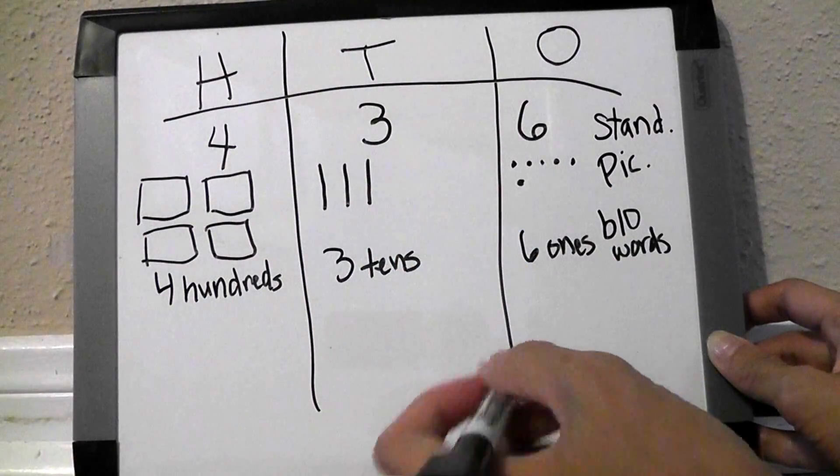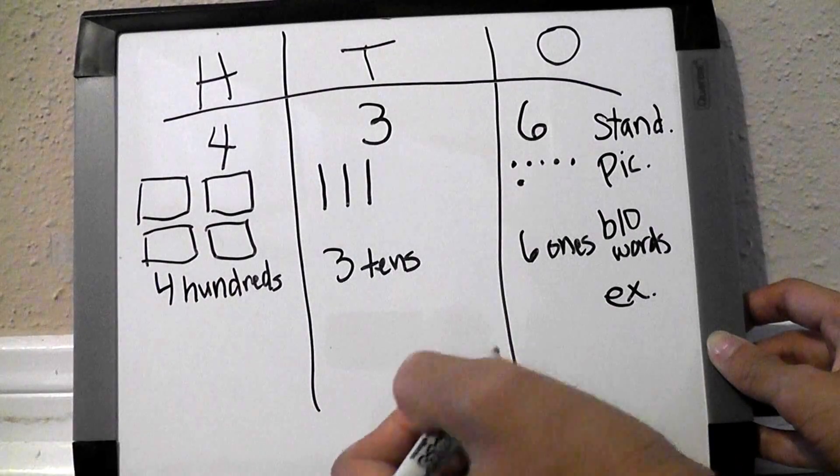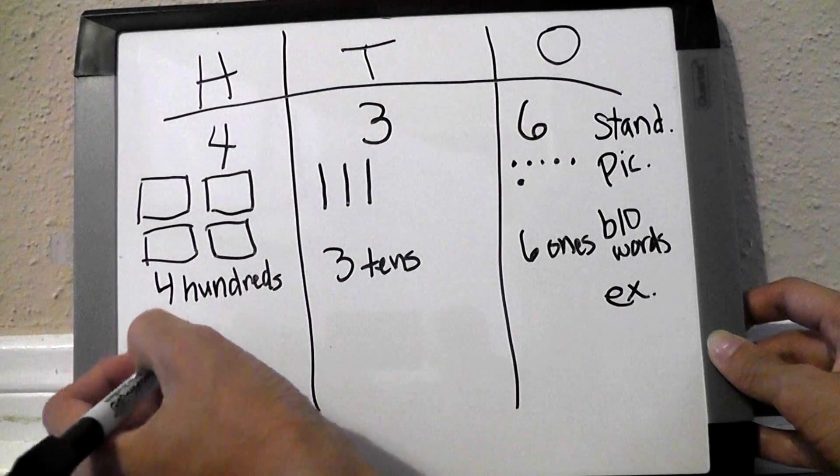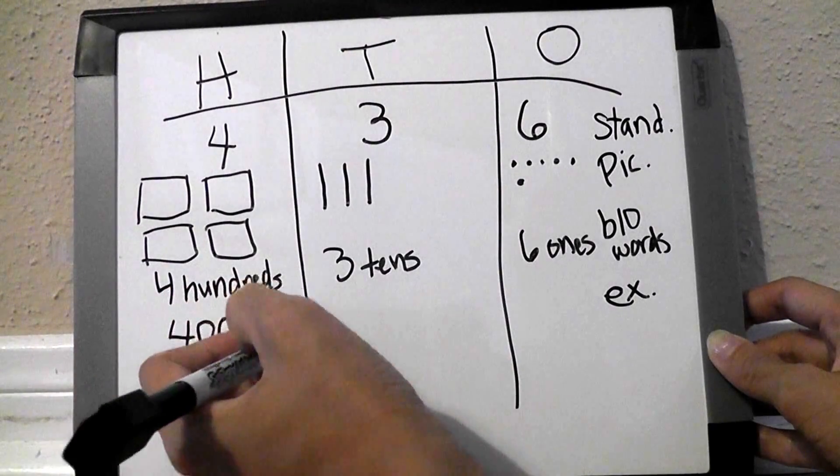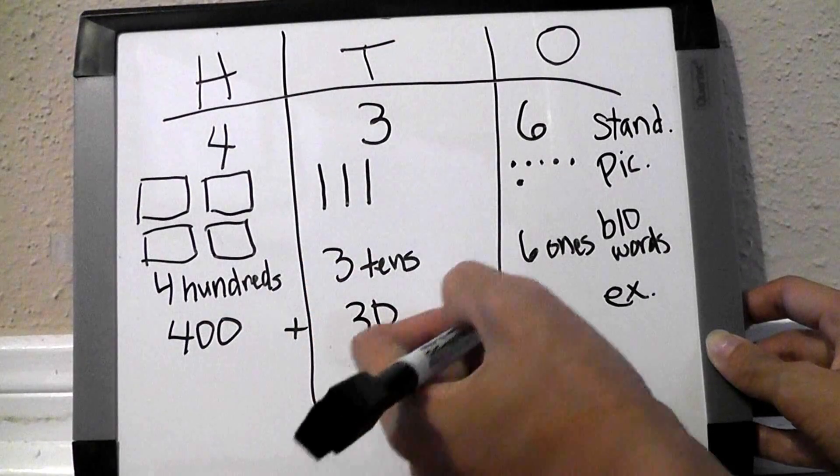The next way would be seen in an expanded form. And in the expanded form, we're just using numbers to represent it in the place value. So we would have four hundred plus three tens would mean thirty plus six.